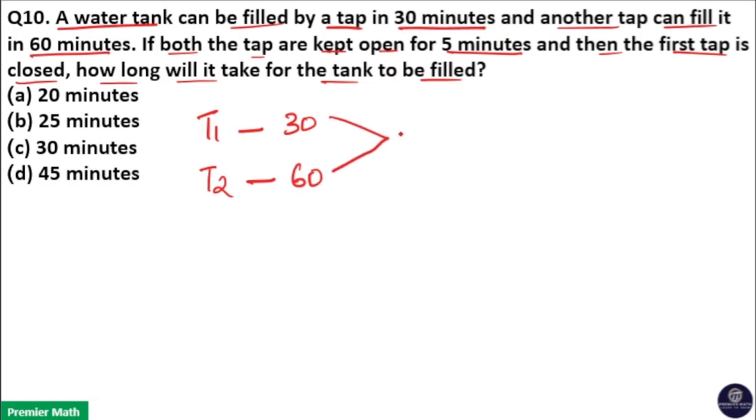Take the LCM of 30 and 60. LCM is 60. 30 goes 2 times in 60, 60 goes 1 time in 60. Here this diagram means 60 liters is the capacity of the tank here.